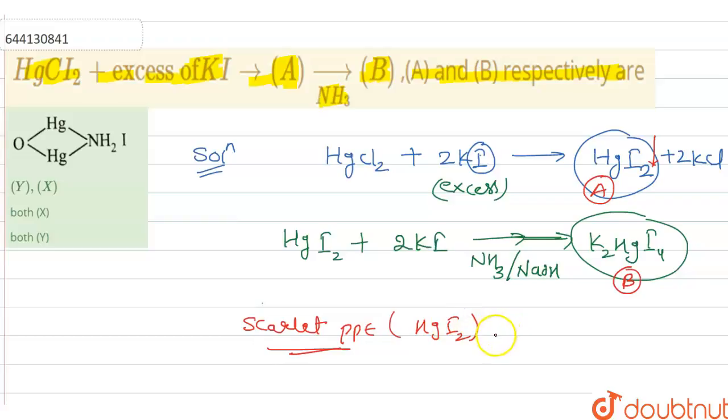And B is potassium tetra-iodide mercurate, and it is also known as Nessler reagent.